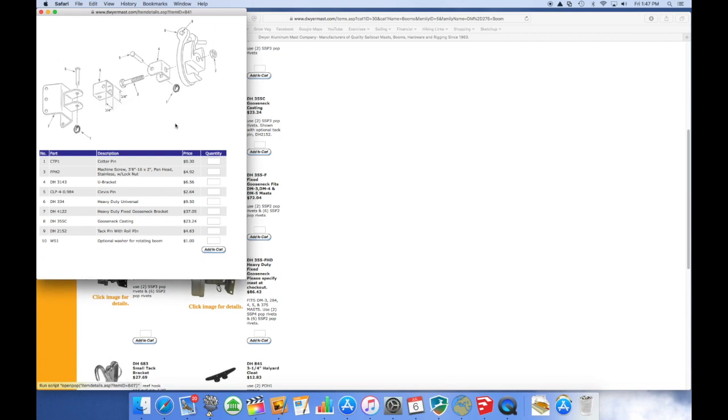And here in the diagram there are some other parts that should look familiar. We have the U-bracket, which we used, item number four, and the heavy duty universal, item number six. U-bracket is DH3143, and of course we use two of those, and DH334 is the heavy duty universal, and we used one of those.